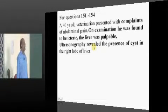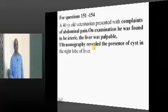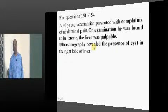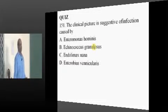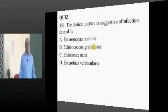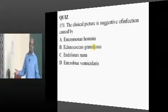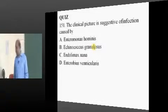Abdominal pain, icteric, liver palpable, ultrasound showing a cyst — what is your answer? Very easy question: Echinococcus granulosus. If case studies are there, it is even easier.